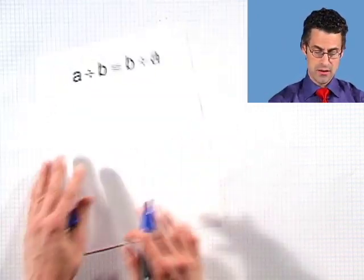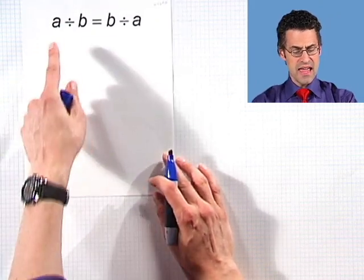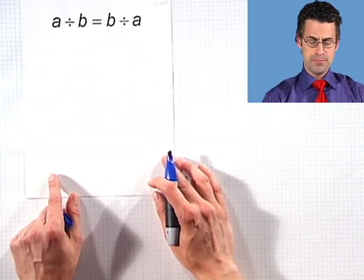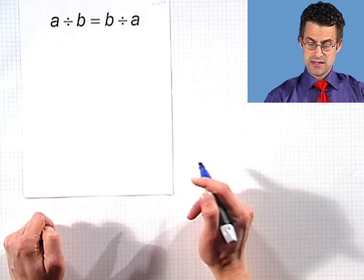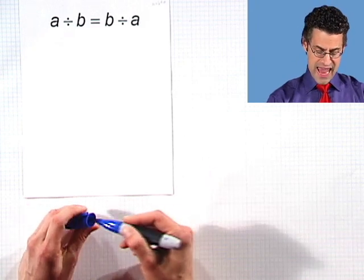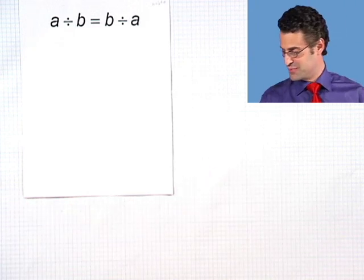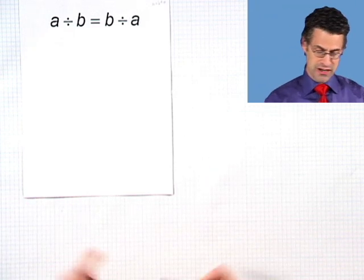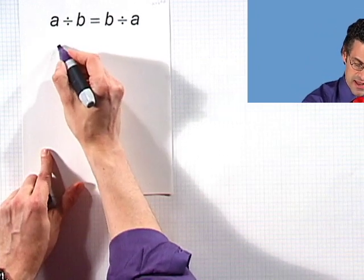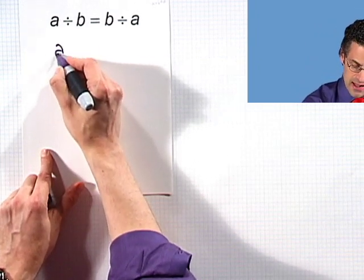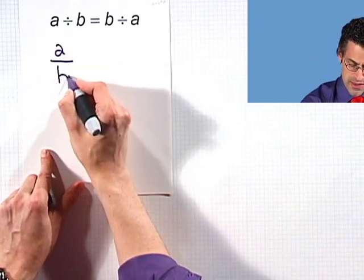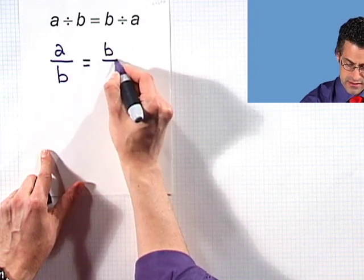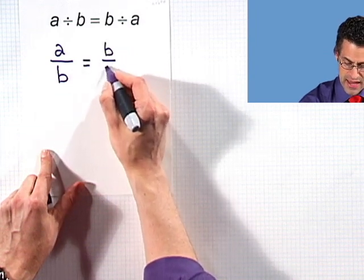What about this? A divided by B equals B divided by A. This is actually pretty tricky, believe it or not. Let me write this out: A divided by B equals B divided by A.